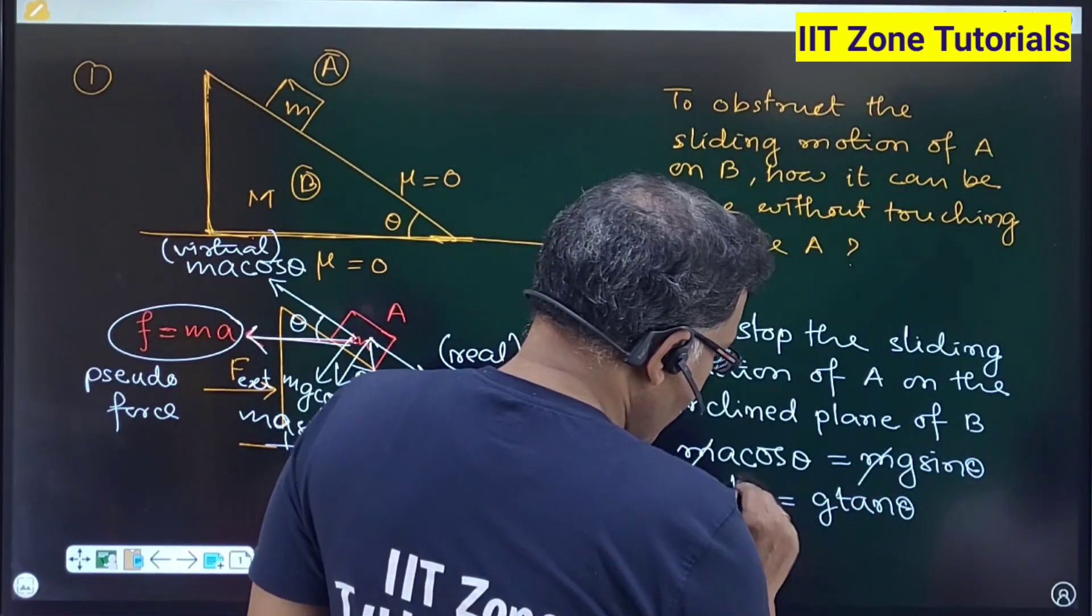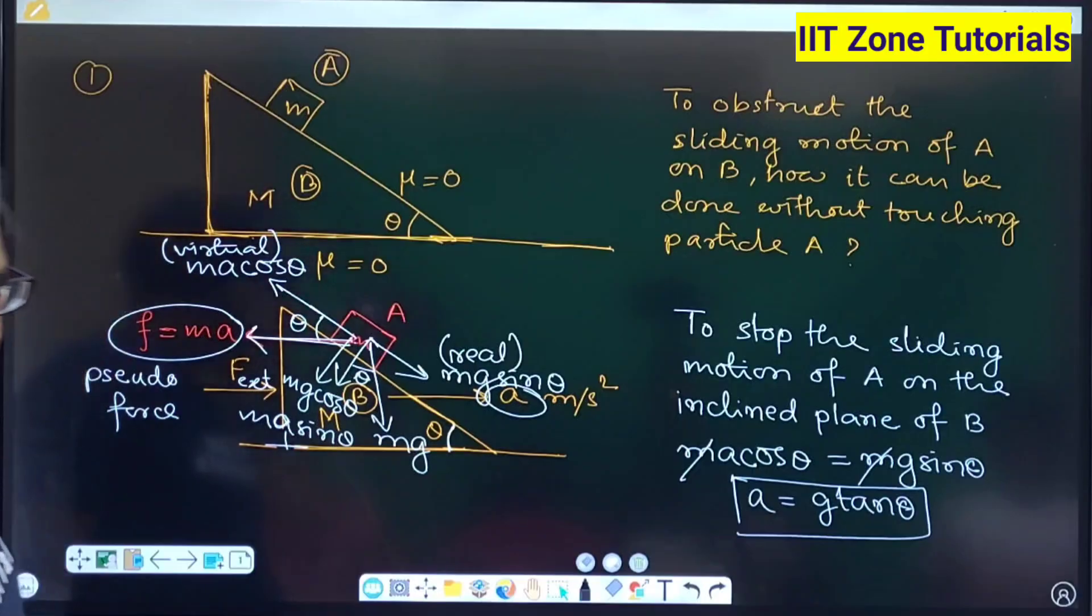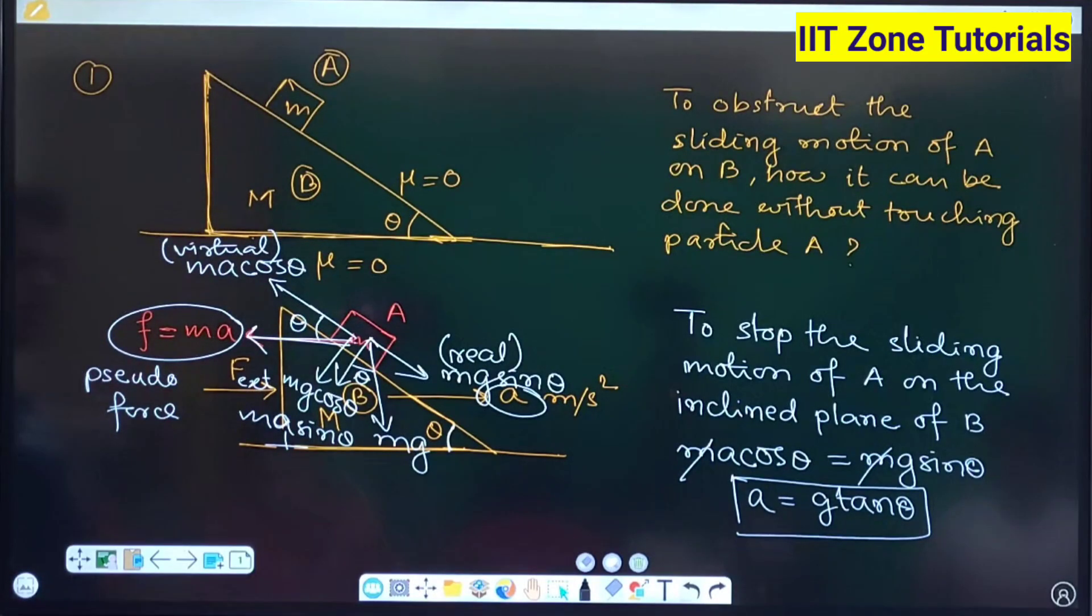Are you getting me or not? That means when you apply some external force on capital M which produces a resulting acceleration of g tan theta on capital M then only you can achieve this result.